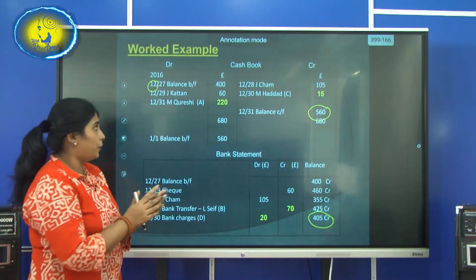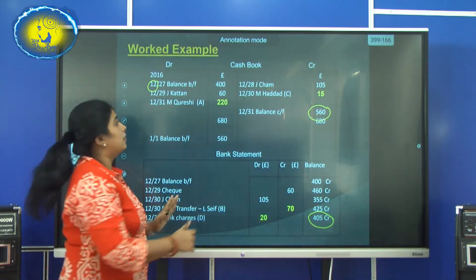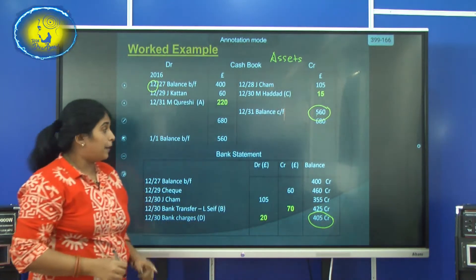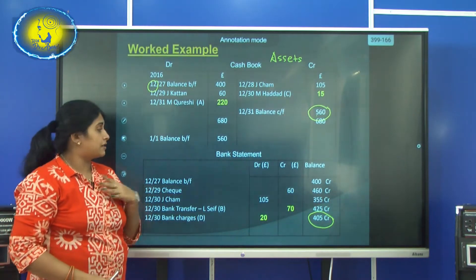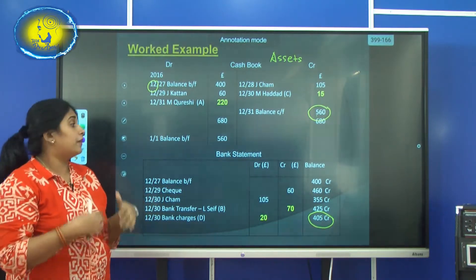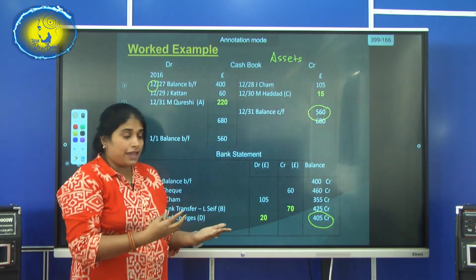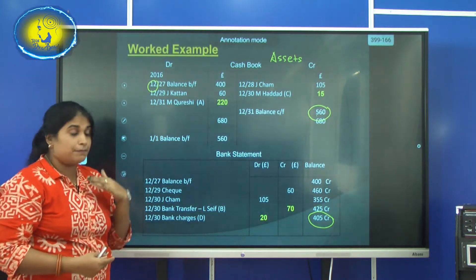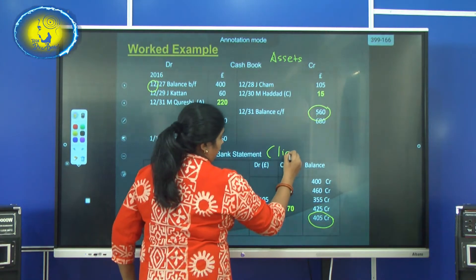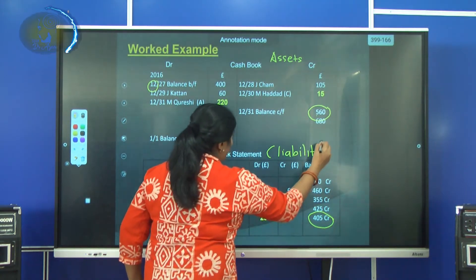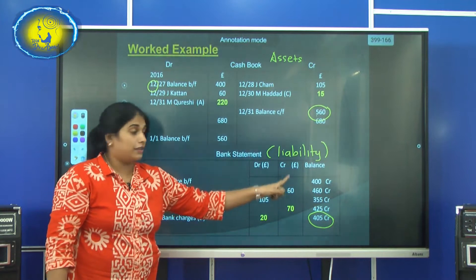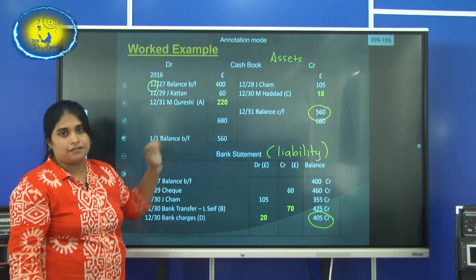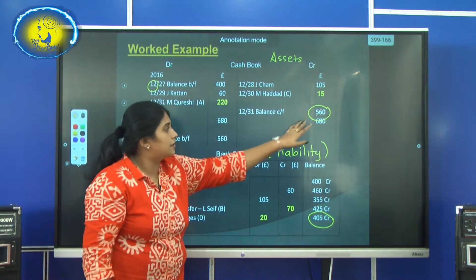You have to assume that for the business, the bank account is treated as an asset. But to the bank, we are liabilities because we have deposited our cash — whenever we ask, the bank has to return it, so they are liable to us. When liability increases, it's credited; when liability decreases, it's debited. But when assets increase, it will be debited; when assets decrease, it will be credited. Keep that in mind: the cash book bank account is treated as an asset, but the bank statement treats our account as a liability.